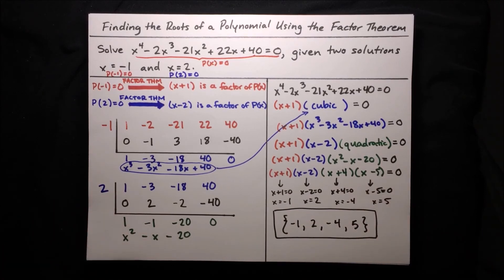Now we see how to use the factor theorem to help us find remaining solutions to polynomial equations if we know an initial solution. In the future, we'll also see how to use the factor theorem to solve for unknown coefficients of polynomials.